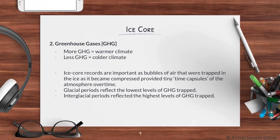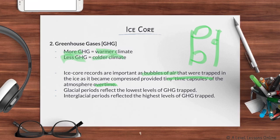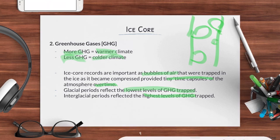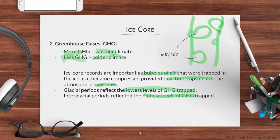The second ice core evidence is greenhouse gases. Generally, more greenhouse gases means a warmer climate and fewer greenhouse gases means a colder climate. When you extract an ice core you can see bubbles of air trapped as the ice was slowly compressed — these provide tiny time capsules of the atmosphere over time. During glacial periods the ice core reflects the lowest level of greenhouse gases, while interglacial periods reflect the highest level, shown by larger bubbles.